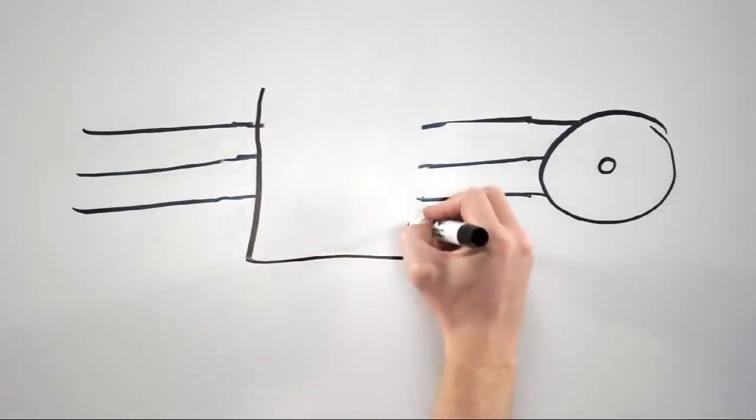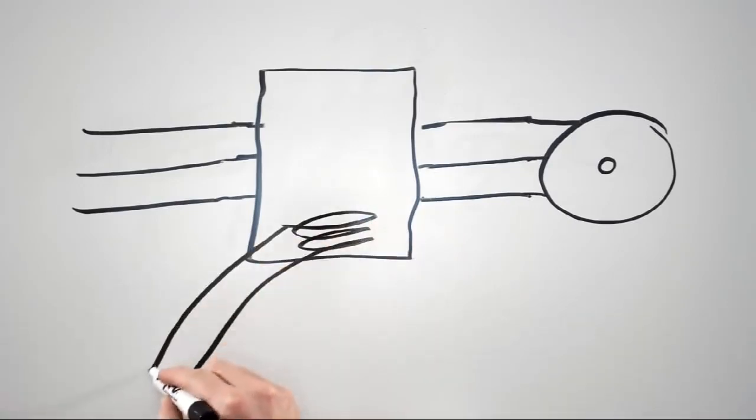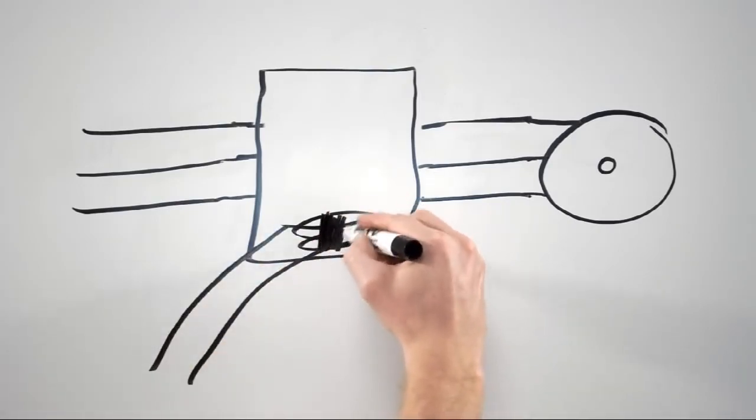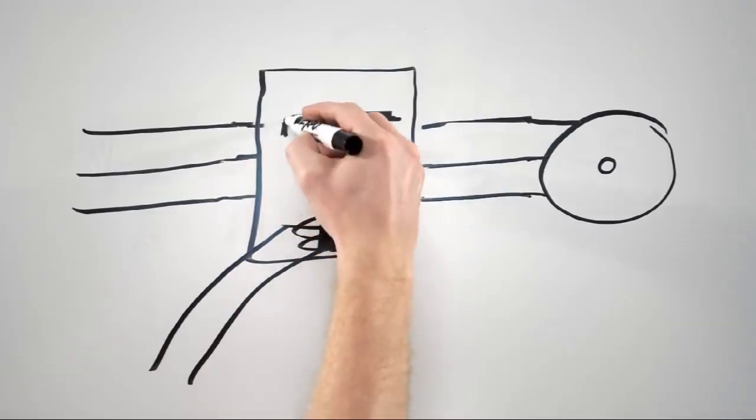So they invented this thing called a contactor. Inside the contactor, there is a coil of wire wrapped around a piece of metal. Above that piece of metal, there is another piece of metal that is attached to an electrical bridge, which connects contacts on one side to the other side.